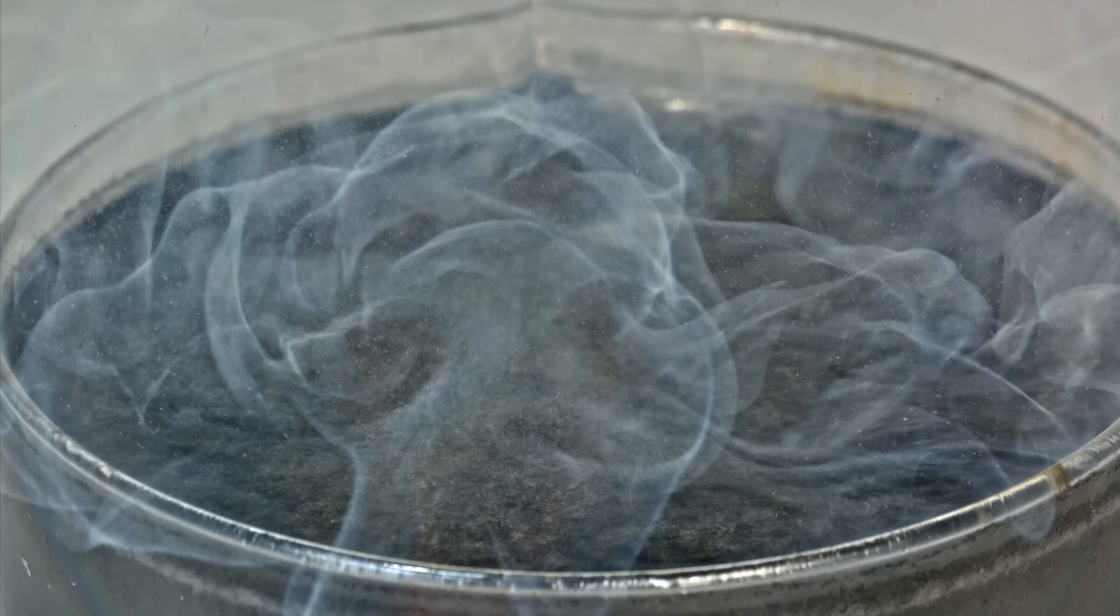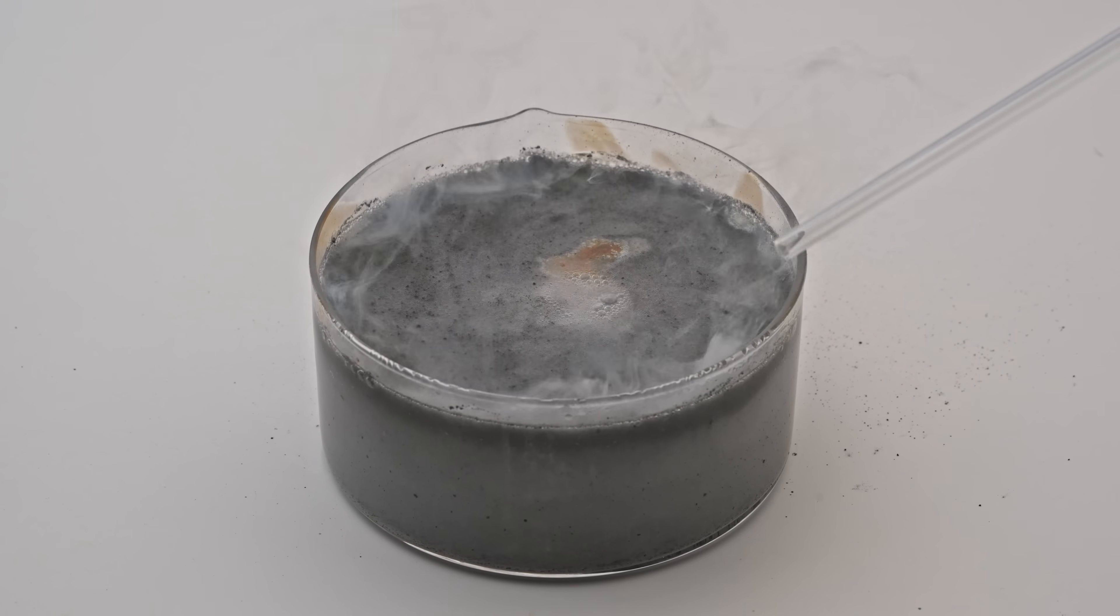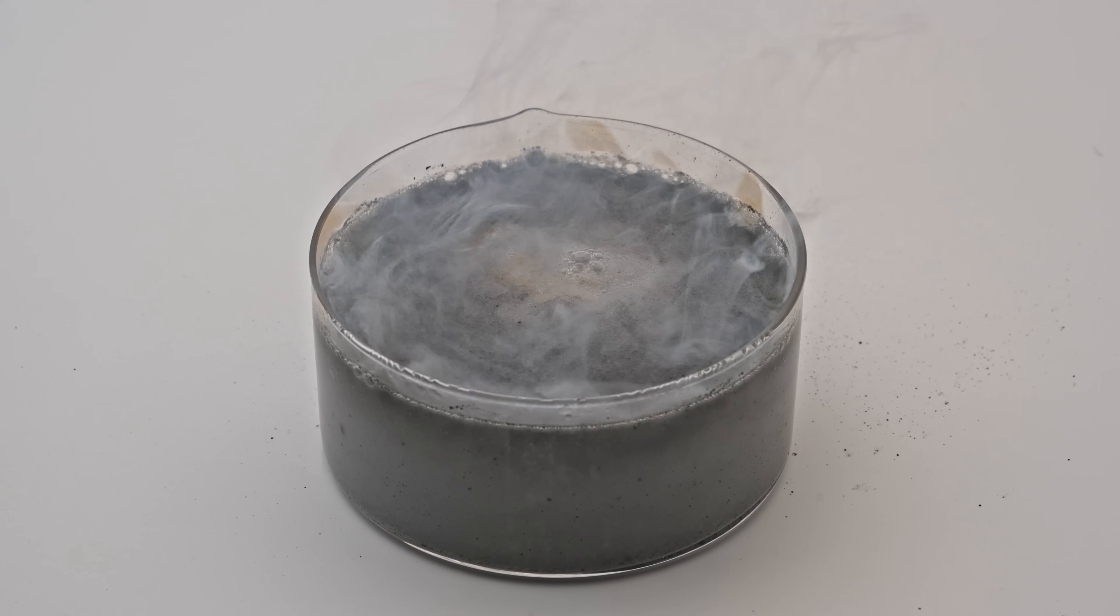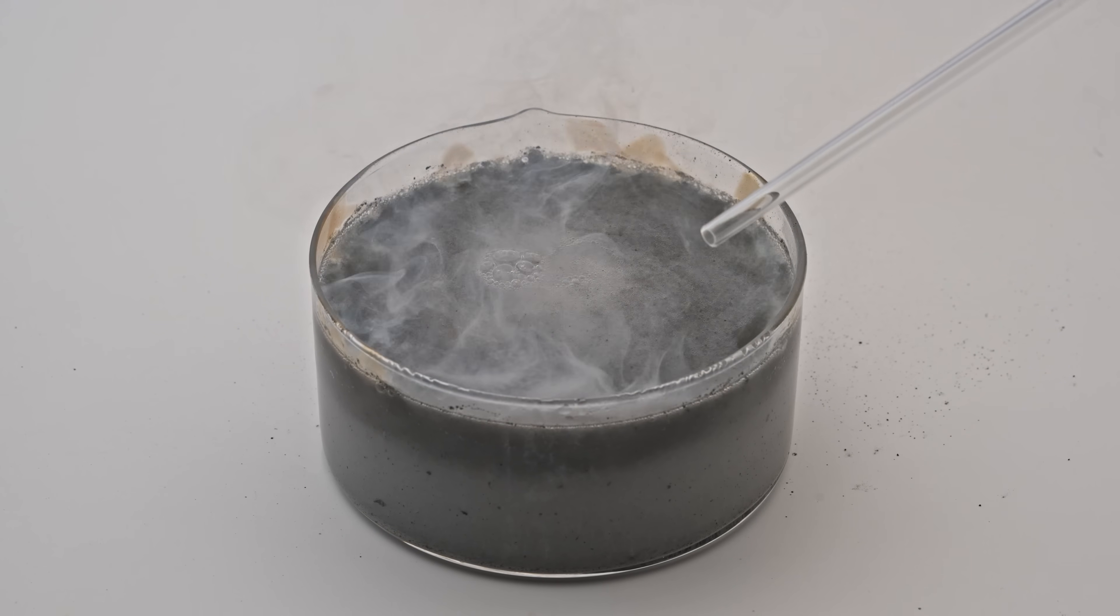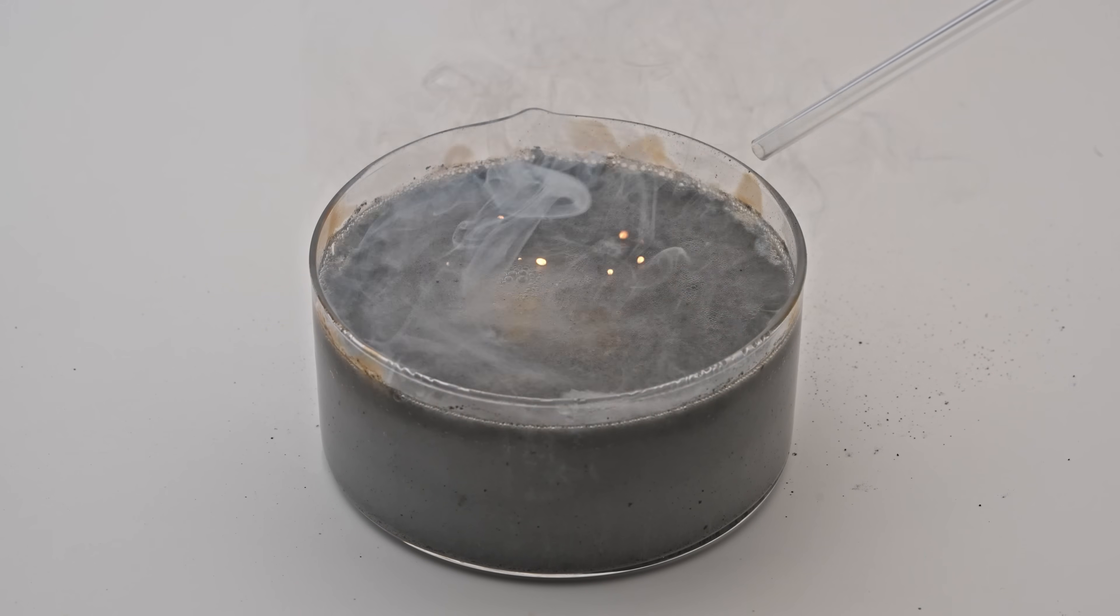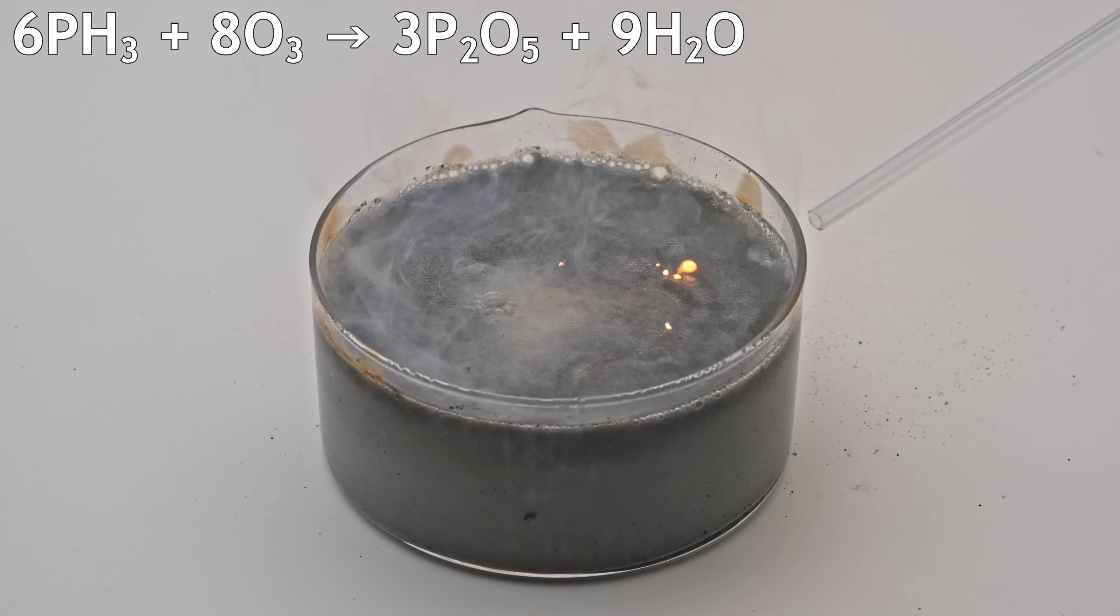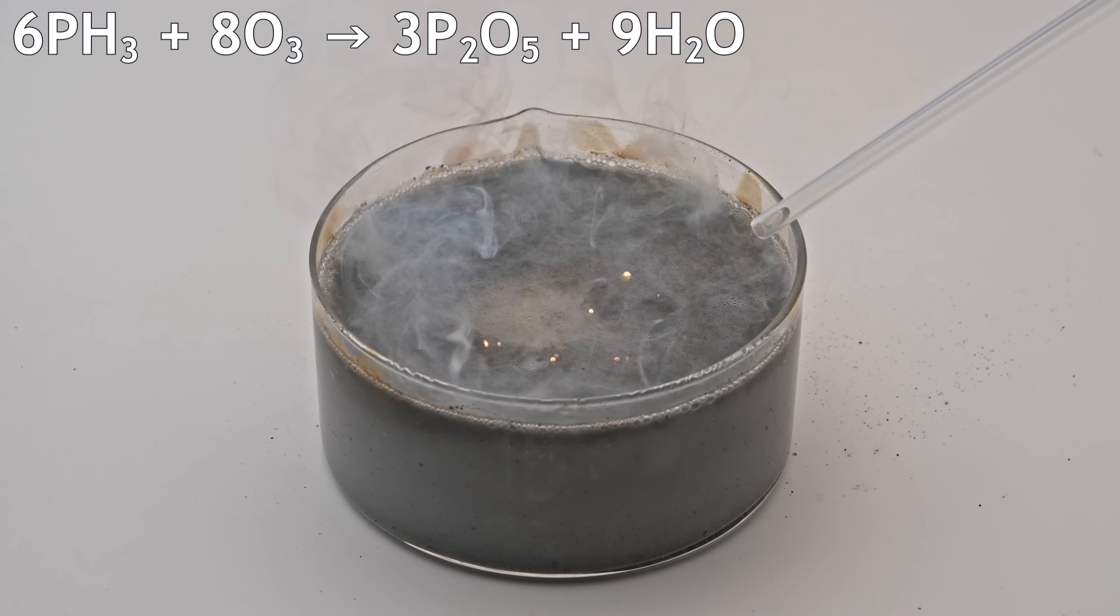Phosphine, which normally doesn't ignite in air on its own, bursts into flames instantly when it comes into contact with ozone. The phosphine gas bubbles pop on the water's surface, react with the ozone, and form clouds of phosphorus pentoxide smoke.